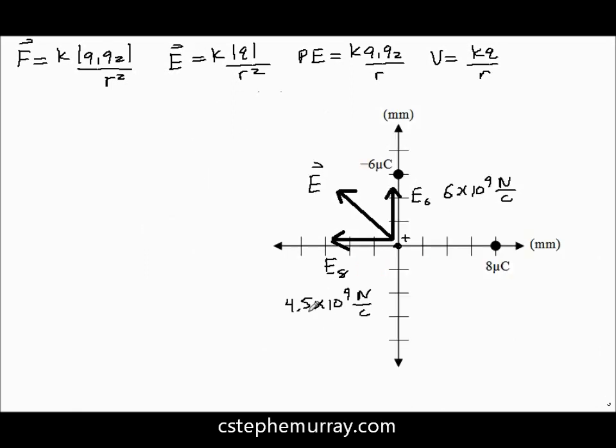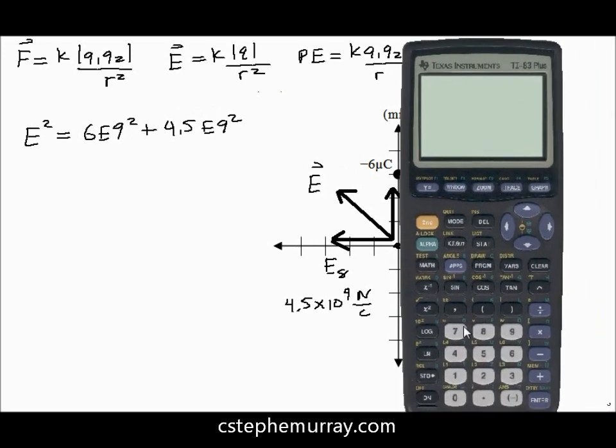Alright, we've now moved things around so that we have a little less stuff on the page and we have plenty of room over here to work. Remembering that electric field is a vector and we have two vector components that are perpendicular to one another, we know we must use Pythagorean theorem. So, we know that our net electric field, squared, our hypotenuse, must equal 6E9 squared plus 4.5E9 squared.